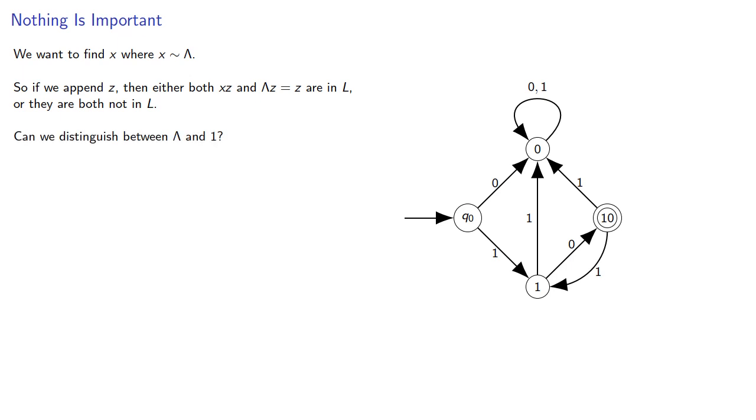Can we distinguish between the empty string and 1? If z is not in L, then λz, which is to say z, is in L. Could 1z be in L? And if we think about that, the answer is yes. If z is 0, then 1z is the string 10, which is in our language, and so we can distinguish between the empty string and 1.